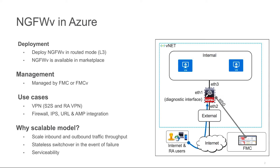In public cloud, next-generation firewall can provide you features like VPN, firewall, next-generation IPS, URL filtering, and advanced malware protection. This virtual appliance is available in the Azure marketplace and can be deployed using the Azure wizard or an ARM template. It can be managed by Firepower Management Center, which can be deployed in your data center or in public cloud.